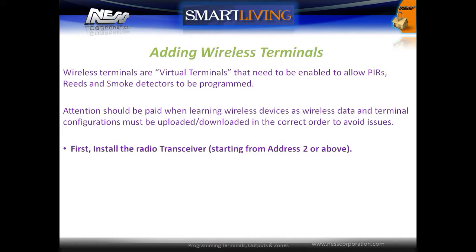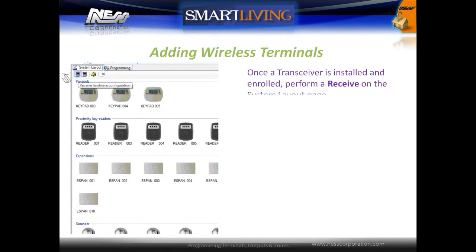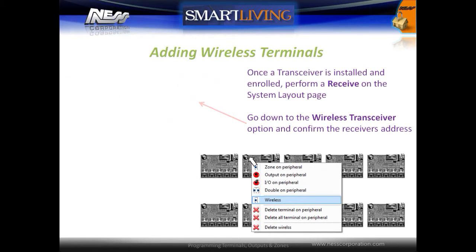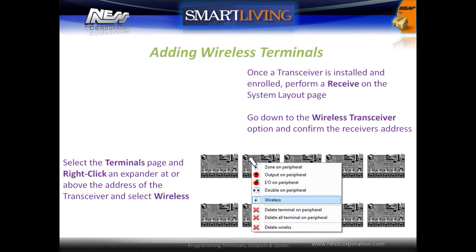Once a transceiver is installed and enrolled, perform a receive on the system layout page. Go down to the wireless transceiver option and confirm the receiver's address. Remember that a transceiver in the system is seen as a reader device, so it should be clear of all other proximity readers on the system. Select the Terminals page.